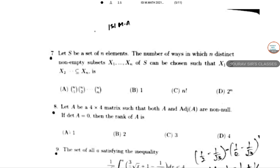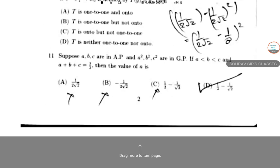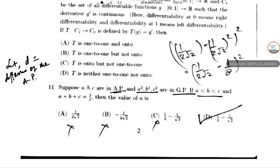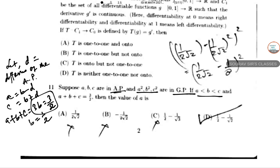Hello students, welcome to ISI M.Math 2021 solution. Today solving question number 11. Suppose A, B, C are in arithmetic progression and A², B², C² are in geometric progression. If A < B < C and A + B + C = 3/2, find the value of A. Let D be the common difference of the AP, so A = B - D and C = B + D.